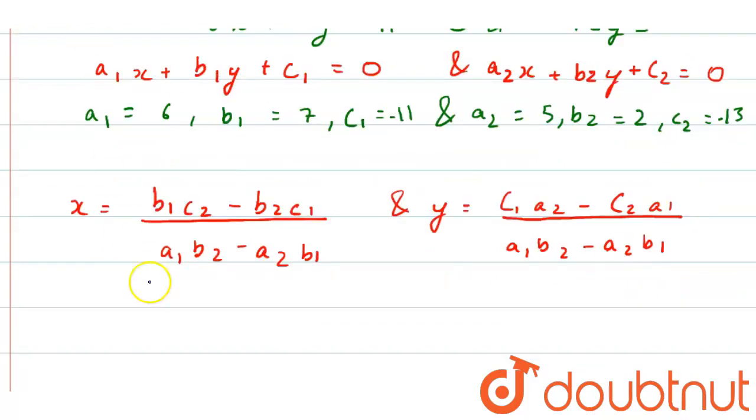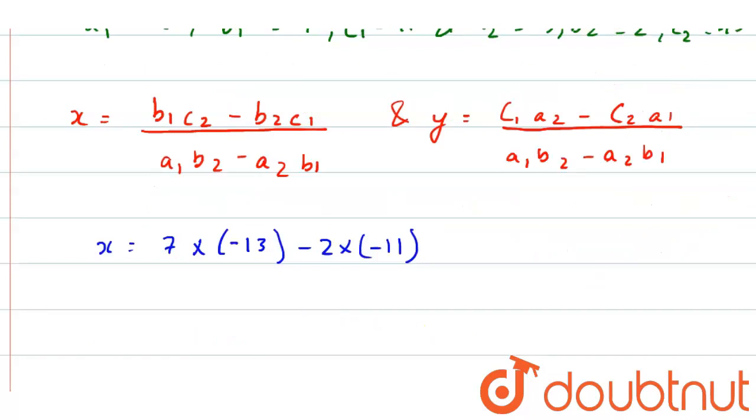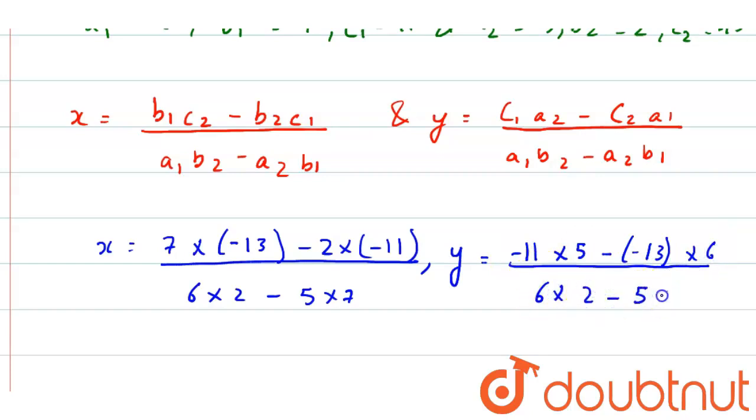Now if we put the values, we will get x equals 7 into minus 13 minus 2 into minus 11, divided by 6 into 2 minus 5 into 7, and y as minus 11 into 5 minus minus 13 into 6, divided by 6 into 2 minus minus 5 into 7.